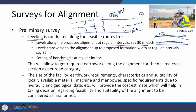Once all this information is in hand, it allows us to compute earthwork along the alignment and determine the desired cross sections required per the road category. Based on the size of the facility, earthwork requirements, characteristics, and suitability of locally available material, machinery, and manpower, everything is converted into cost estimates. A decision is then taken on which of the two or three alternatives studied in detail under the preliminary survey is going to be selected as the final alignment.